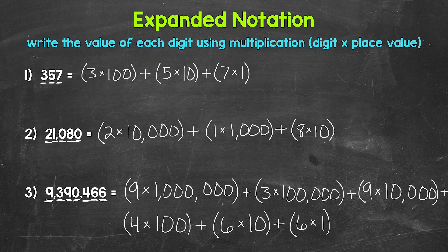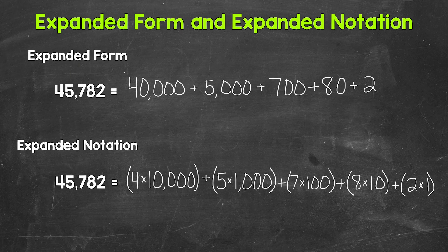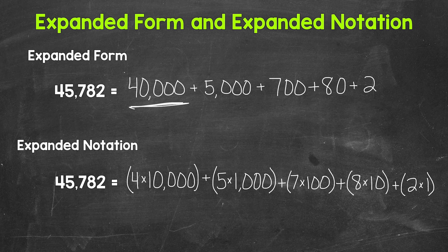So now that we've gone through both expanded form and expanded notation, let's take a look at one more example where we have a number written both ways. We have 45,782 written in expanded form and expanded notation, so we can compare. Both are expanding this number out to show the value of the digits. We will start with the 4 in the ten thousands place. It has a value of 40,000 for the expanded form. And for the expanded notation, we have 4 times 10,000. Both represent the value of that 4.